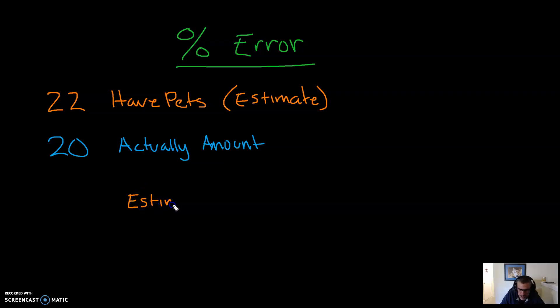So we take the estimate, we then subtract the actual amount. That tells us how much we were off by. And then we divide that by the actual amount, because that will convert it into a percent error for us.